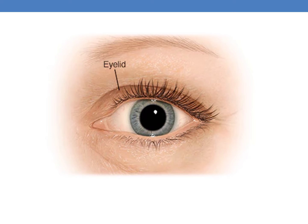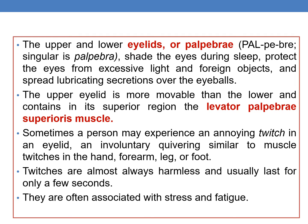First, coming to eyelids — the upper and lower eyelids, or palpebrae. The upper and lower eyelids shade the eyes during sleep, protect the eyes from excessive light and foreign objects, and spread lubricating secretions over the eyeballs. The upper eyelid is more movable than the lower eyelid and contains in its superior region the levator palpebrae superioris muscle.